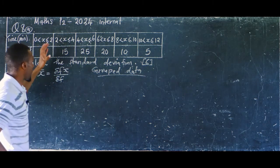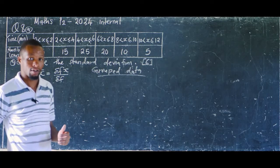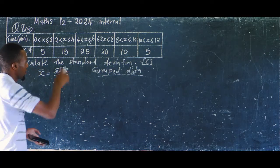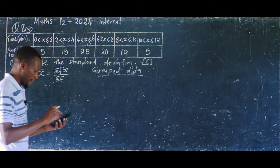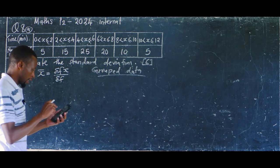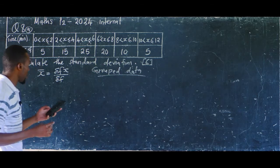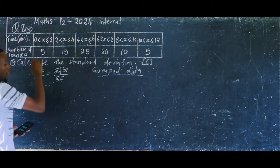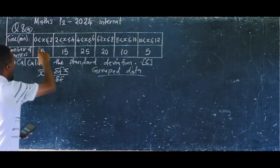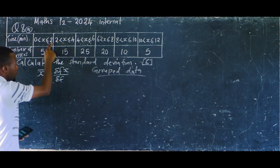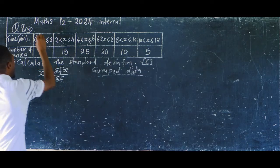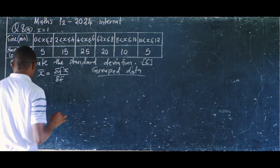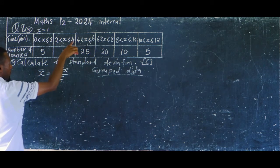For us to find the x value, it has to be the midpoint. So we'll quickly find the x values from the data given. The midpoint for the first class: zero plus two divided by two gives x equals one. Next, two plus four equals six, divided by two gives x equals three.